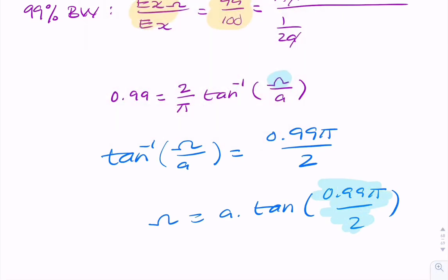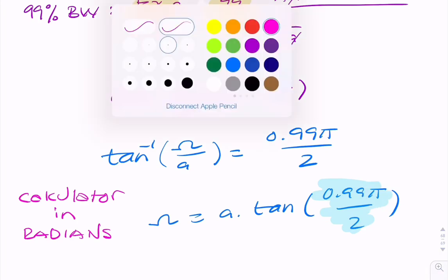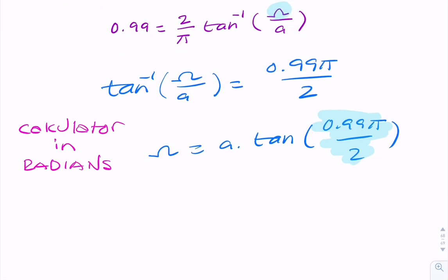Otherwise, your result will be meaningless. You've got the pi there, so everything you calculate needs to be in radians. So if we just put that in the calculator, you end up with 63.7a.